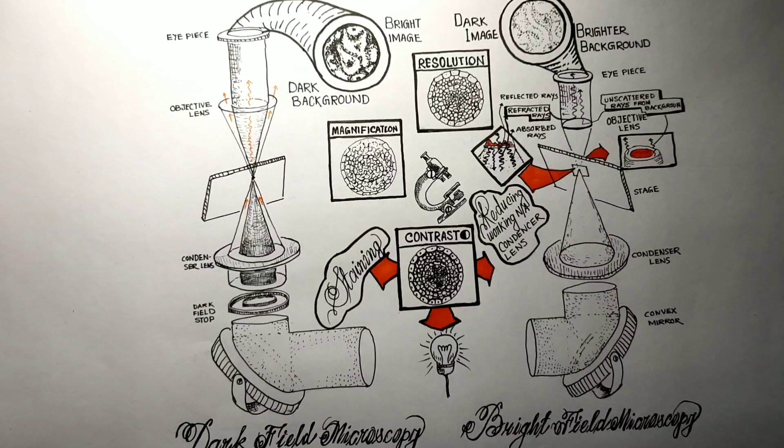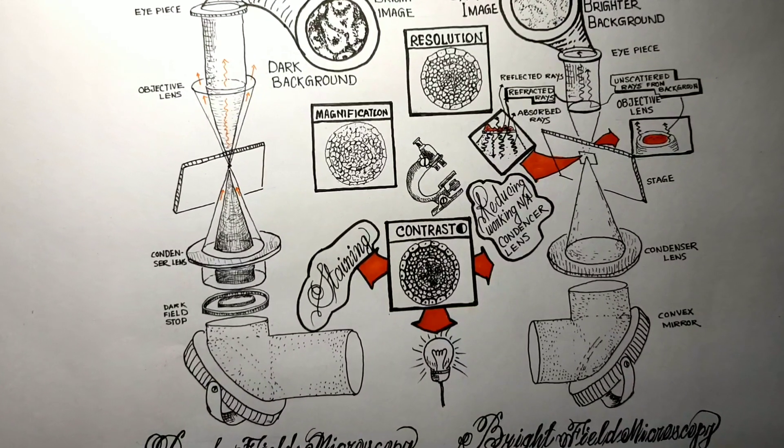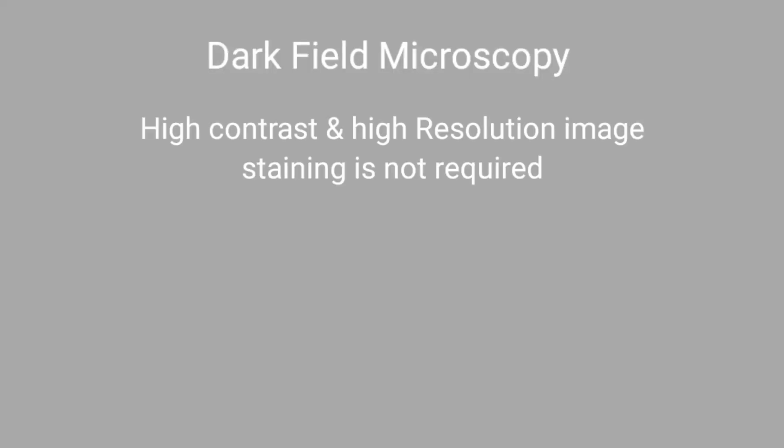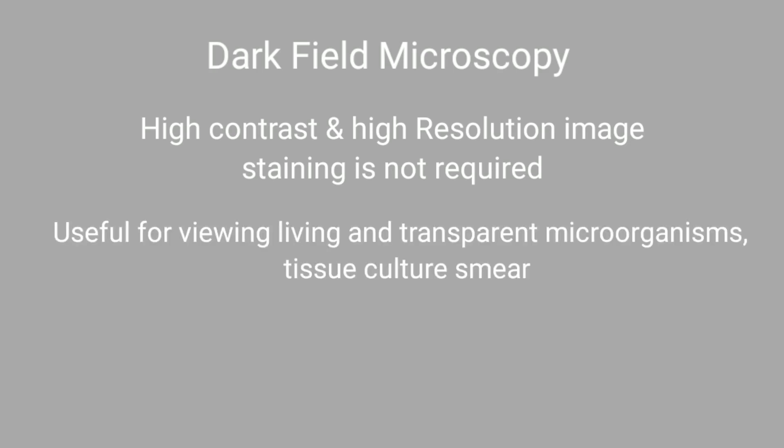Before concluding, I'd like to add some pros and cons of both systems. Dark field microscopy can create high contrast, high resolution images without the use of stains, which is particularly useful for viewing live transparent microorganisms or smears from tissue culture, which have similar refractive indexes as their surroundings, making them invisible in ordinary light microscopy.